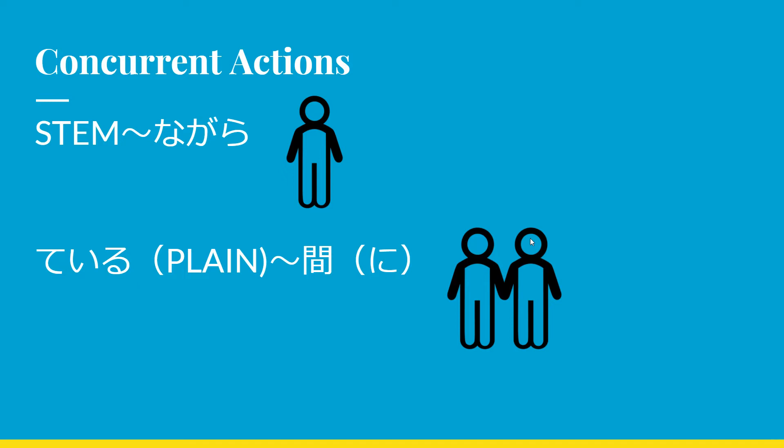Both ながら and 間に translate as 'while' in English, but there is a difference. ながら means one person is doing two actions concurrently at the same time. 間に means two people doing two separate actions but during the same span of time. For example: 先生は喋りながら書いています — while I'm speaking right now, I'm also writing notes down.